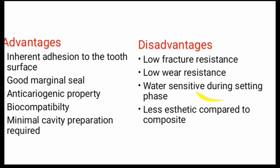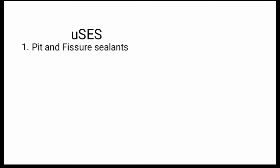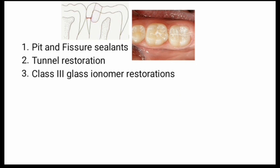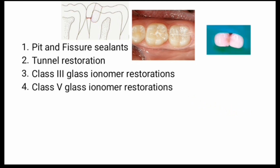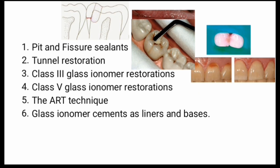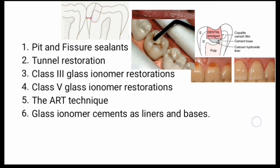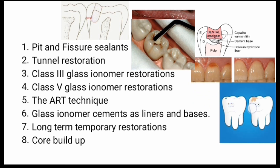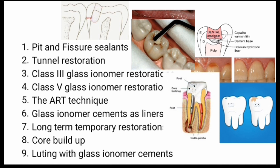Uses of glass ionomer cement include: pit and fissure sealants, tunnel restorations, Class 3 and Class 4 restorations, ART (atraumatic restorative technique), liners and bases, long-term temporary restorations, core build-up, and luting with glass ionomer cements.